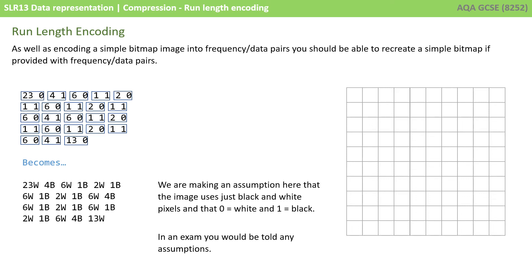If we take that one step further, we end up with 23 white, followed by 4 black, 6 white, and so on and so forth.